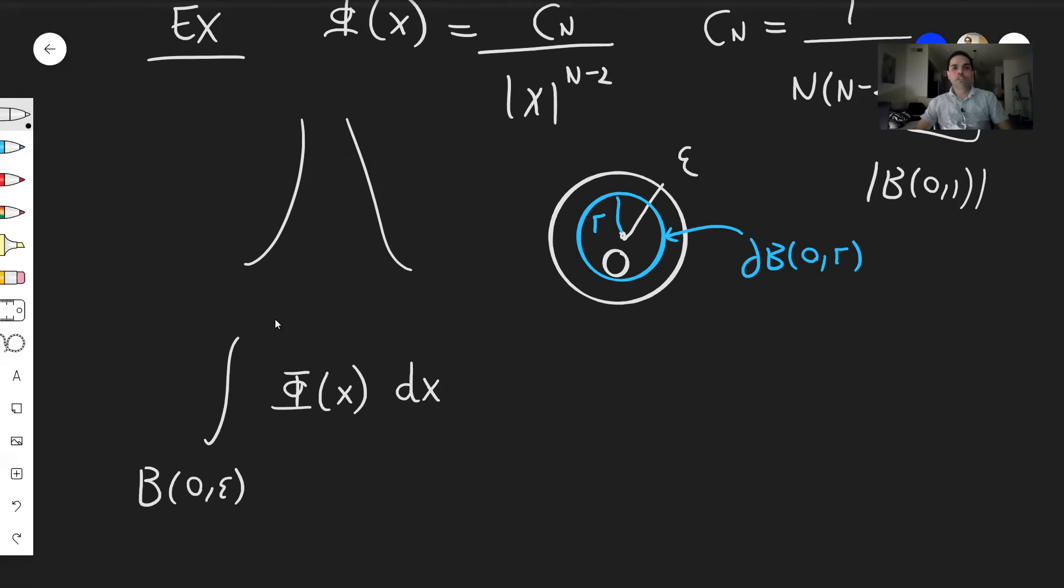first of all, with respect to the radius, so integral from zero to epsilon, and then integrate phi over the sphere centered at zero and radius r, not epsilon, but r.